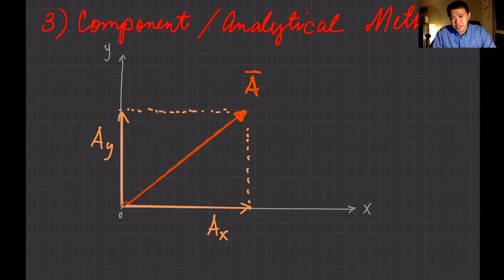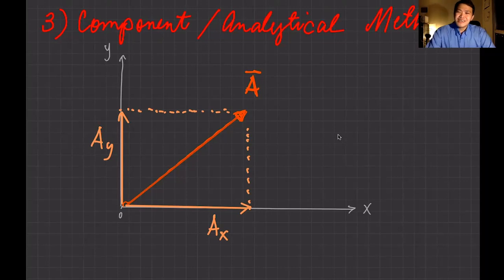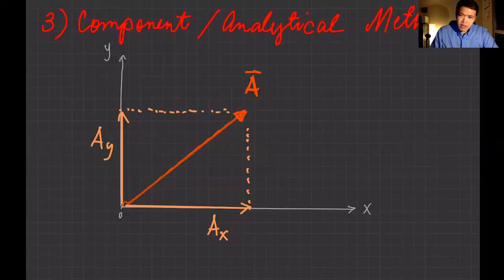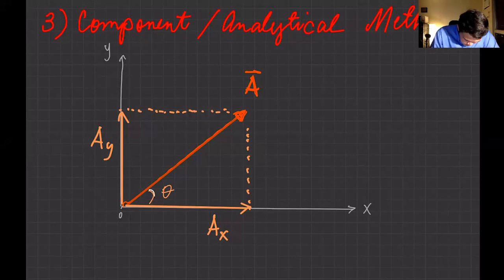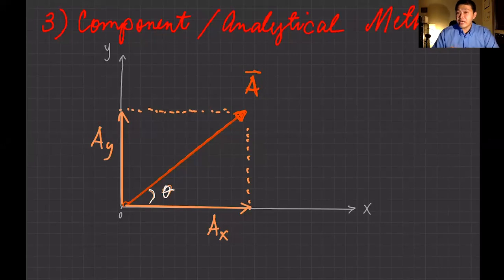What are the equations that relate the x component, y component, and the magnitude of vector A? If you recall your trigonometry — SOH-CAH-TOA — you can equate these projections. Let's start with CAH: cosine equals adjacent over hypotenuse. Look at this triangle; with angle theta, your adjacent is Ax.